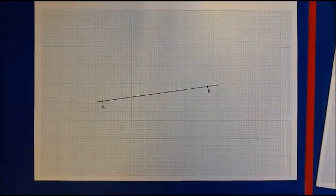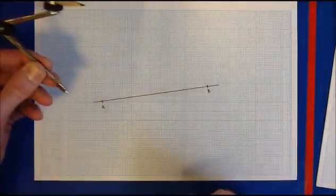Perpendicular bisector of the line AB. Start off by putting your compass point on A.